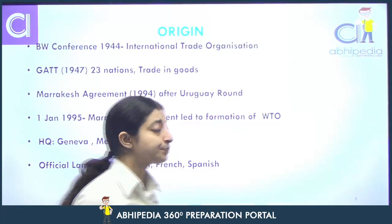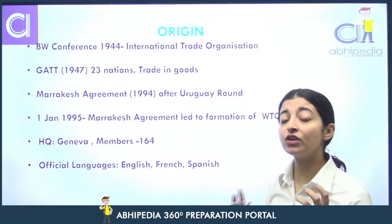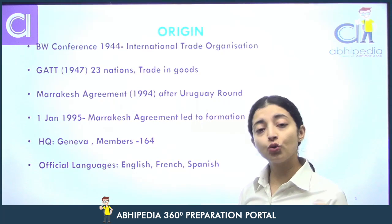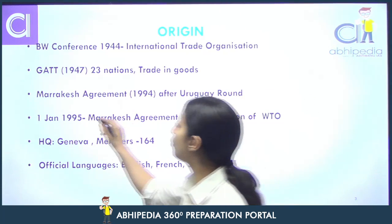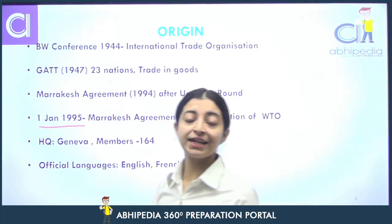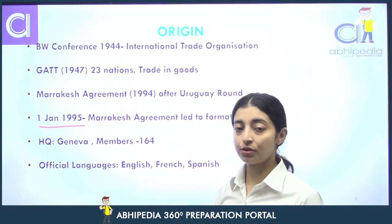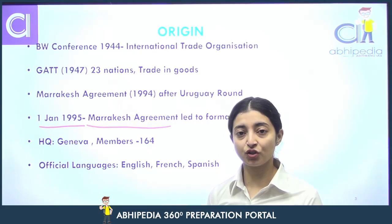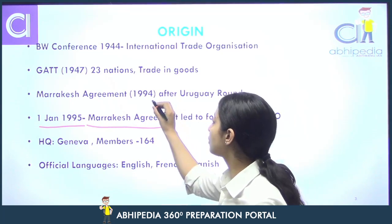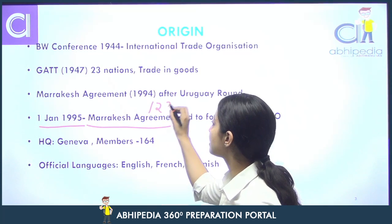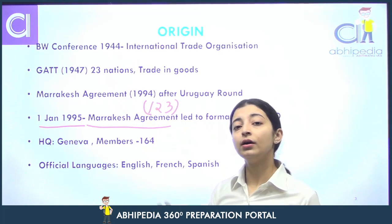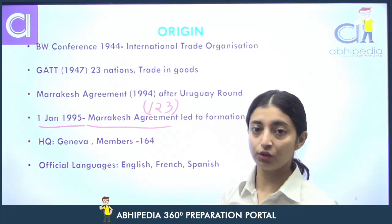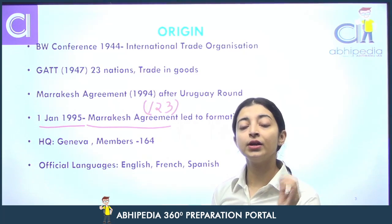Let's begin. Sabse pehle hum baat karte hain ki World Trade Organization ki formation kaise hui. How was World Trade Organization formed? World Trade Organization ki formation hui 1st January 1995 ko under Marrakesh Agreement. Ye Marrakesh Agreement sign hua tha, jiske baad World Trade Organization ki formation hui. Marrakesh Agreement 123 nations ne sign kiya tha. Ab in order to arrive at this story, we have to know a little bit about the background.